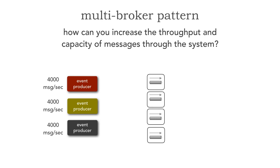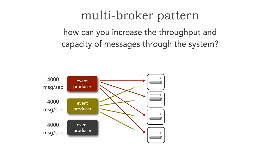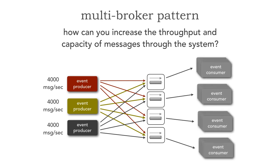Watch what happens here. The first event producer uses a simple round-robin algorithm when it sends a message, firing them off to different queues — the first goes to broker A, broker B, broker C, broker D — and then the yellow event producer does the same thing, and the gray event producer does the same thing. Every time it produces a message it connects to four different brokers, effectively doing a simple round-robin to distribute the load. Now we have competing consumers against each of those queues.